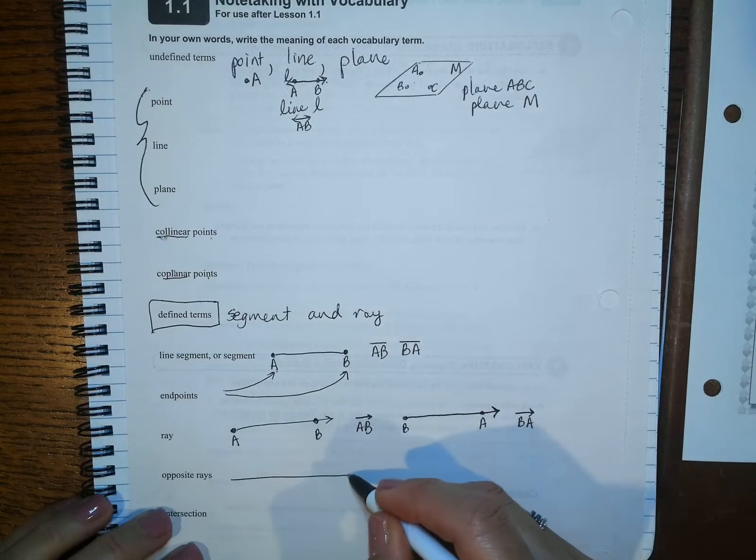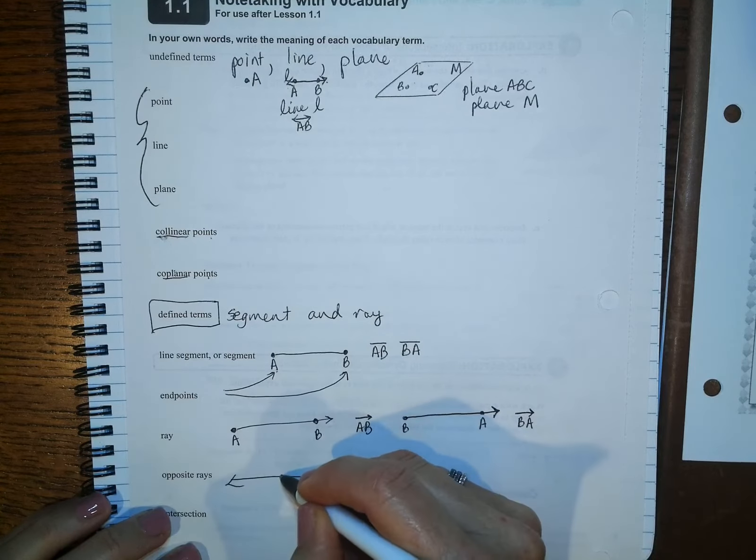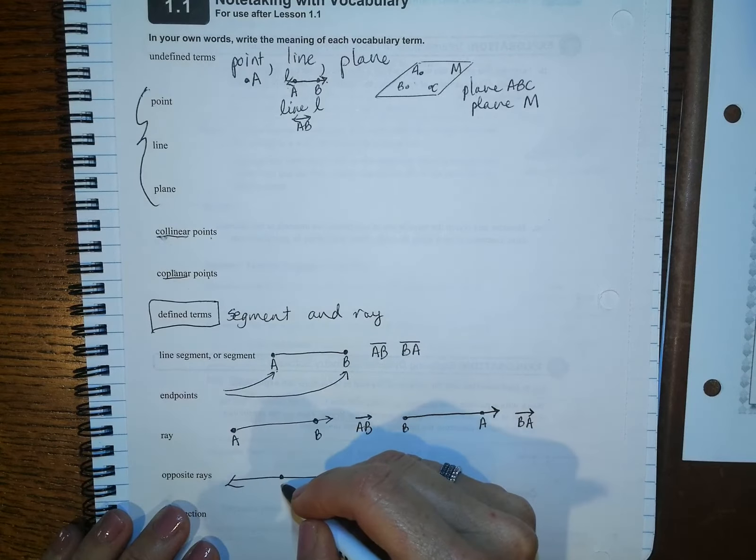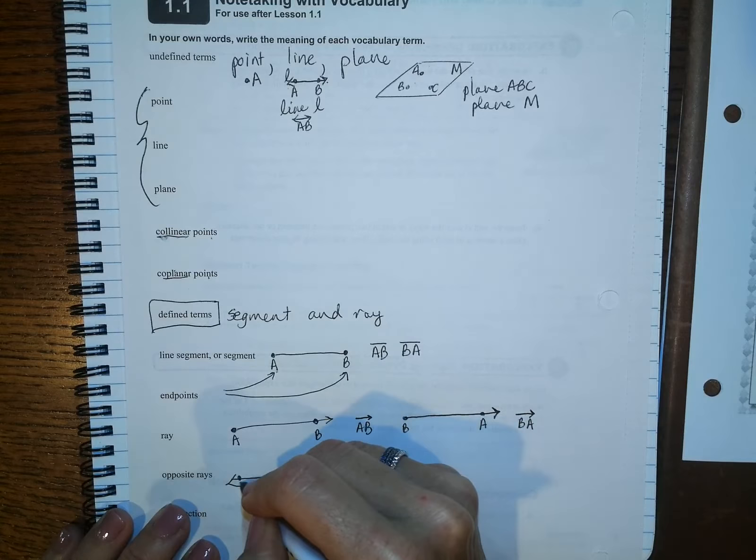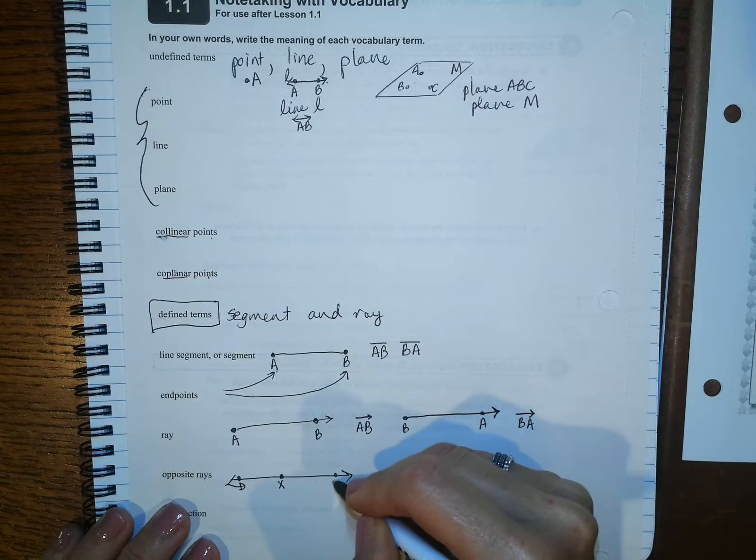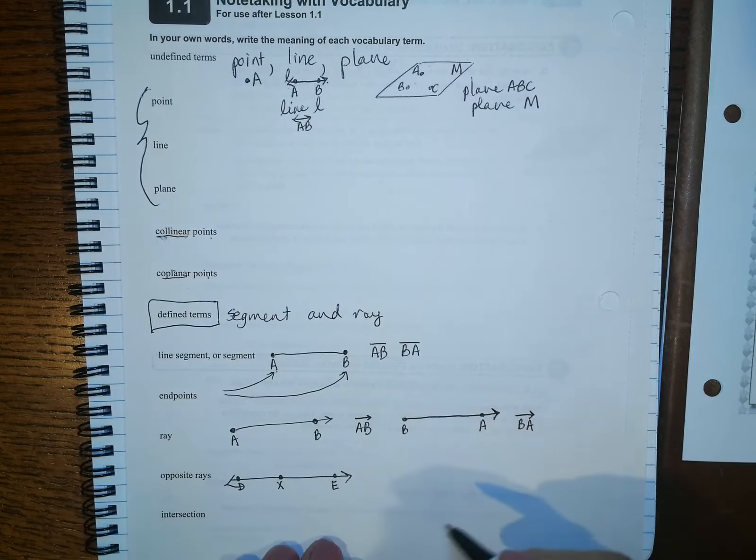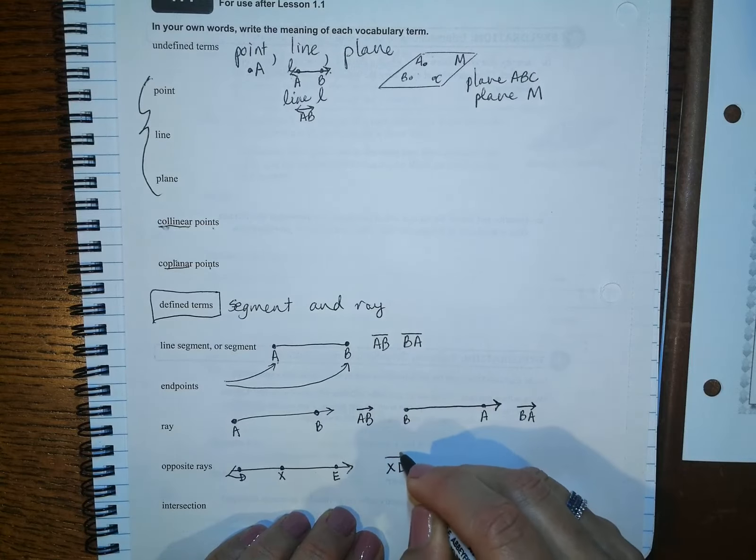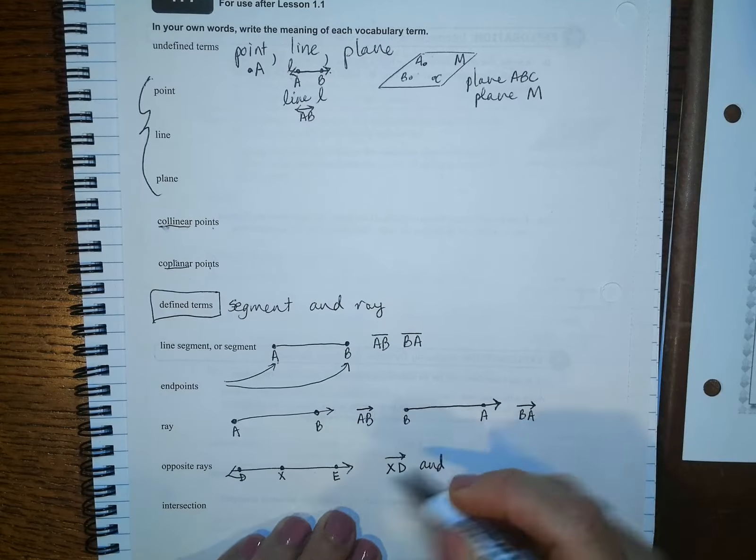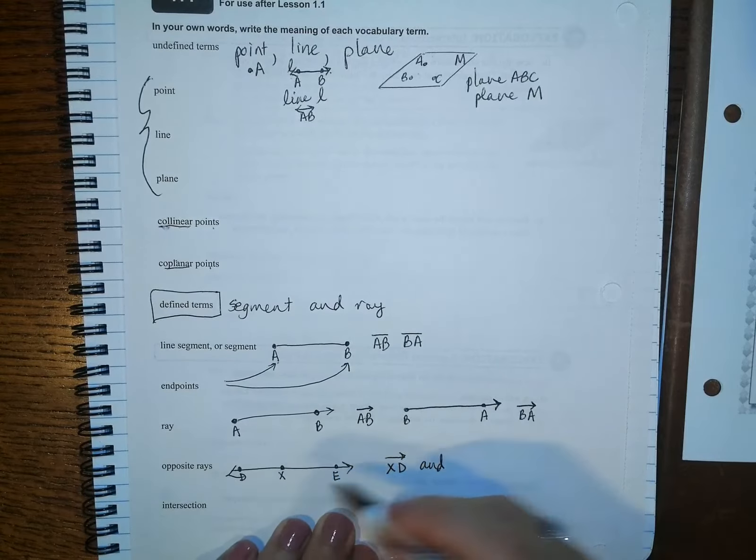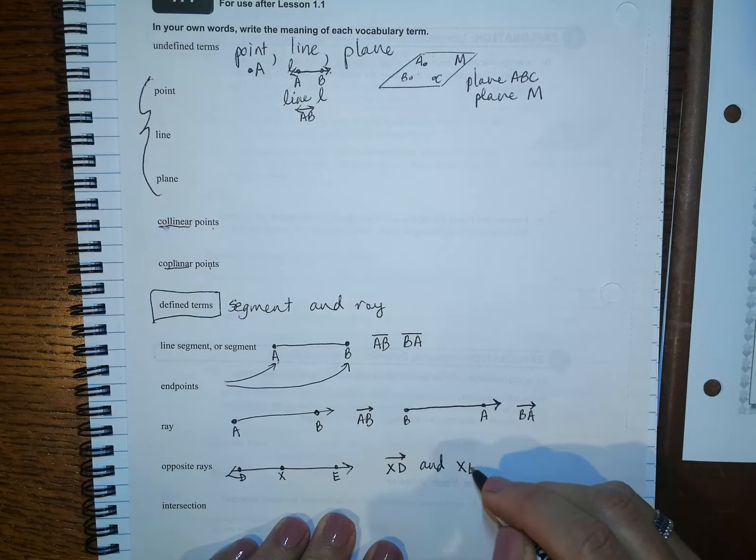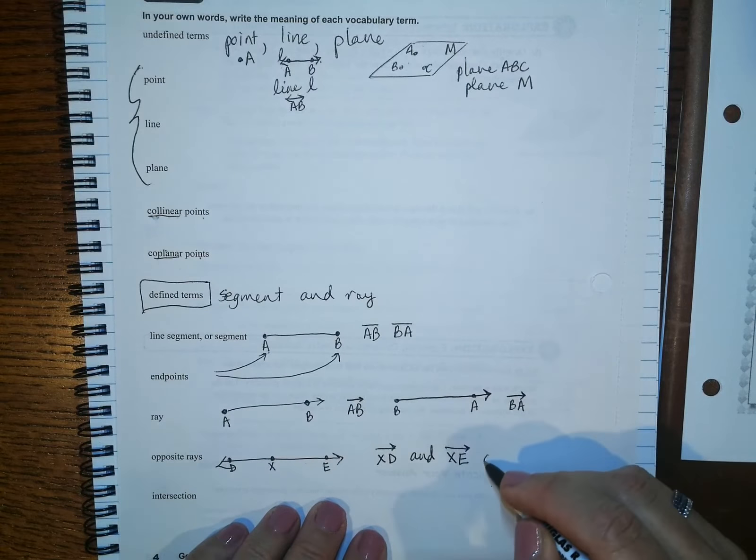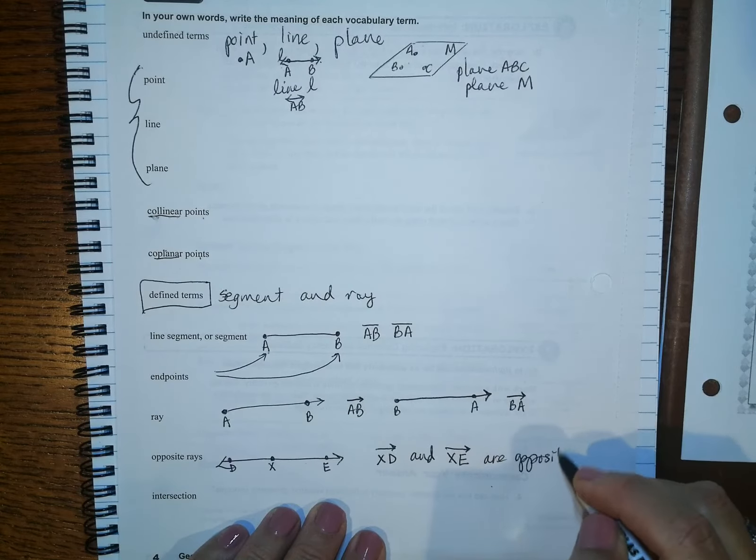Opposite rays are like a straight line. Okay. So one's going this direction. So let's call this X. And let's call this D. And let's call this E. Okay. So if I start at X and I go toward D, in other words, that direction. If I start at X and I go toward E, then the arrow goes over there. Then those are opposite rays.